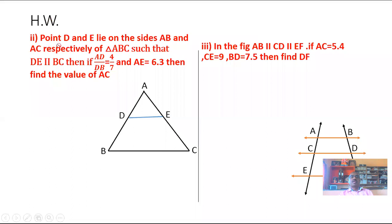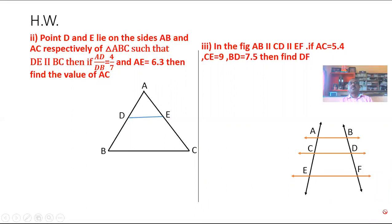Next problems for homework: Point D and E lie on side AB and AC respectively of triangle ABC such that DE is parallel to BC. If AD over DB is equal to 4 over 7 and AC is equal to 6.3, then find the value of AC. Third problem for homework: In the figure, AB is parallel to CD parallel to EF. If AC is equal to 5.4, CE is equal to 9, BD is equal to 7.5, then find DF.